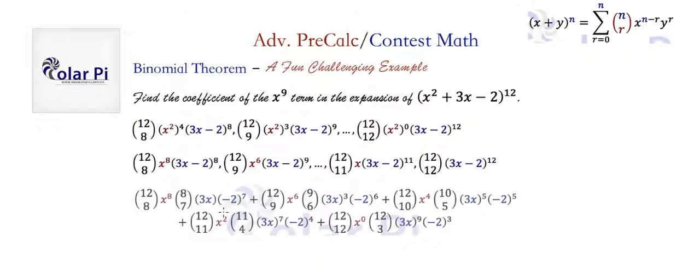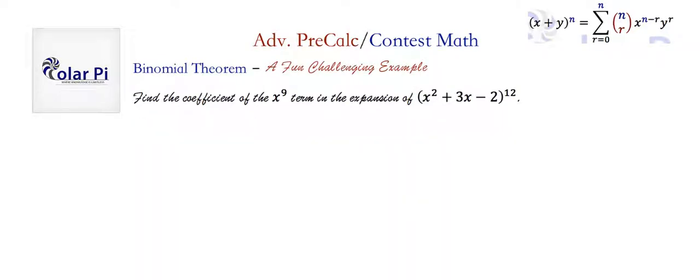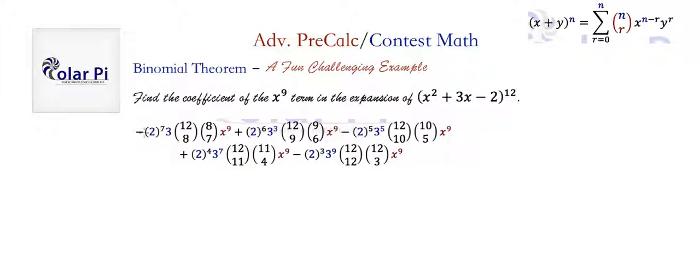All right, so then we have some combining to do here, like x to the 8th here and 3x here. Well, we could just bring the x's together and write x to the 9th, and we write variables after coefficients. So, we could write 12 choose 8, and then 8 choose 7, and maybe in front of them a negative 2 to the 7th, and then a 3 to the 1st. And if we do that and then do similar in all the other parts, then in our next slide, well, we need space first.